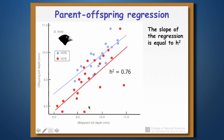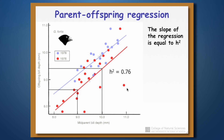Here are two parent-offspring regressions — the red one from 1976 and another from 1978. The slope of that line gives you the narrow sense heritability. For the 1976 red line, the slope is 0.76, telling us that the narrow sense heritability of beak depth is 0.76 — meaning 76% of the variation in that trait is due to additive genetic variance. That's the end of this set of slides. Good luck with the assessment.